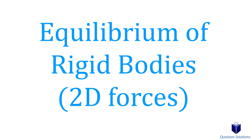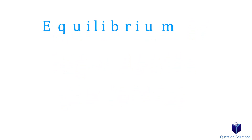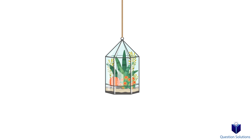Let's talk about equilibrium of rigid bodies. Imagine we have a flower pot hung up like this. There is a weight to this flower pot which is straight down. So what's keeping it still — in other words, in equilibrium? It's the rope that's attached to it, which is creating an opposite force; in other words, a tension in the rope that's holding it in place.